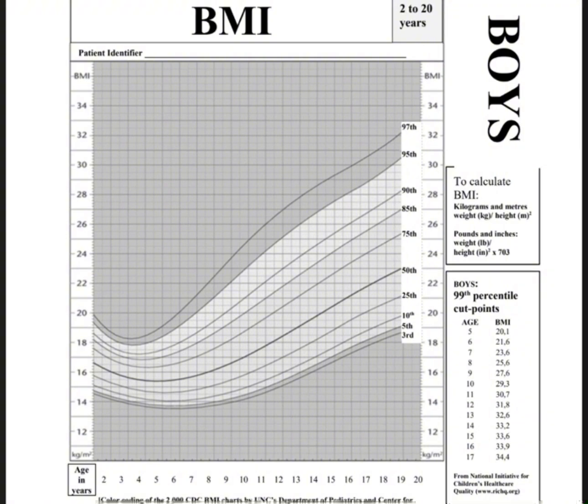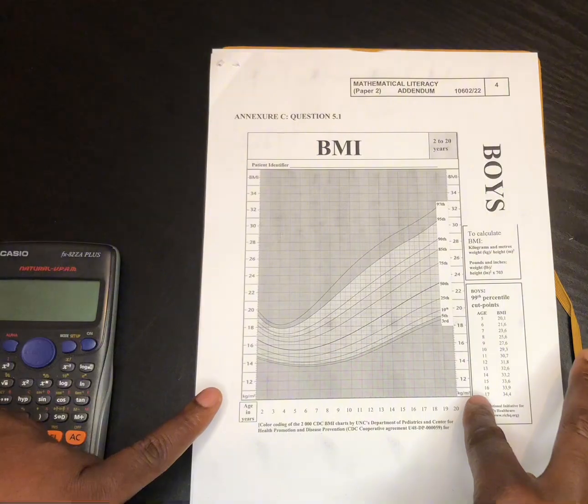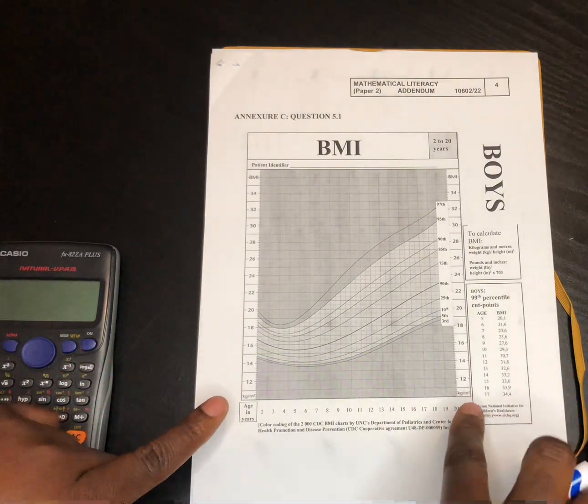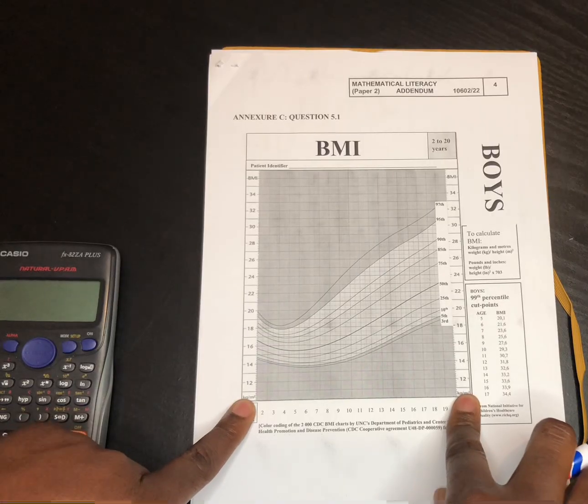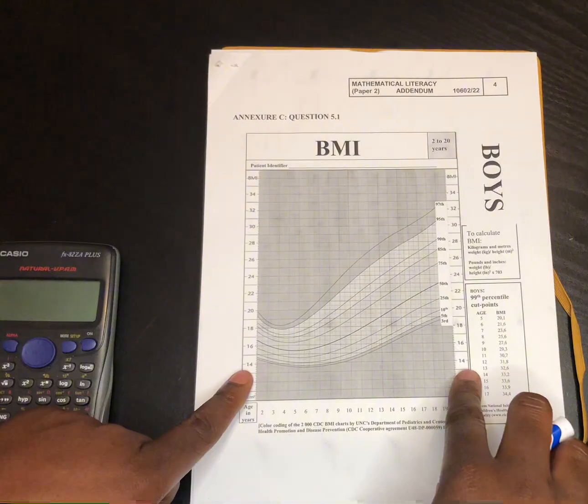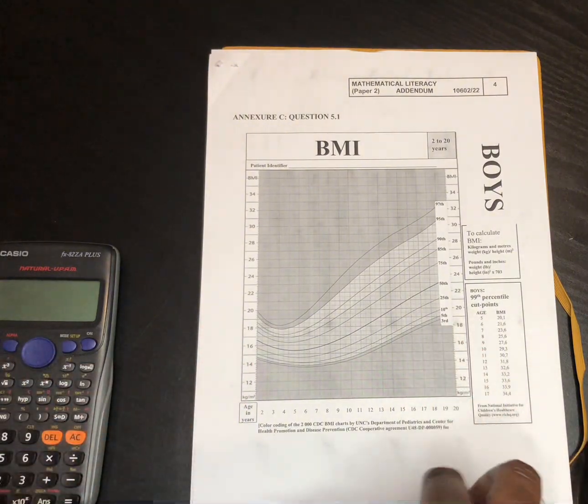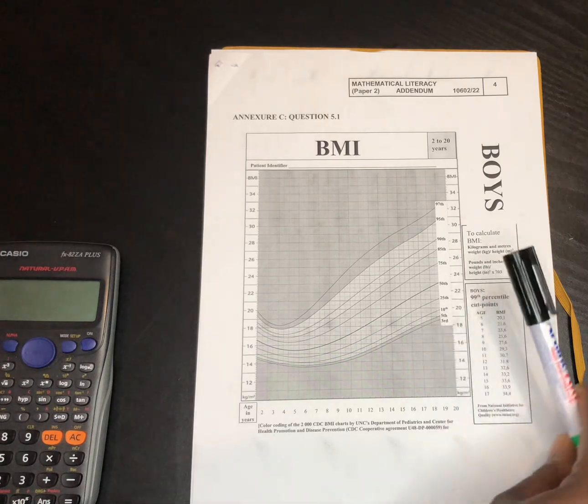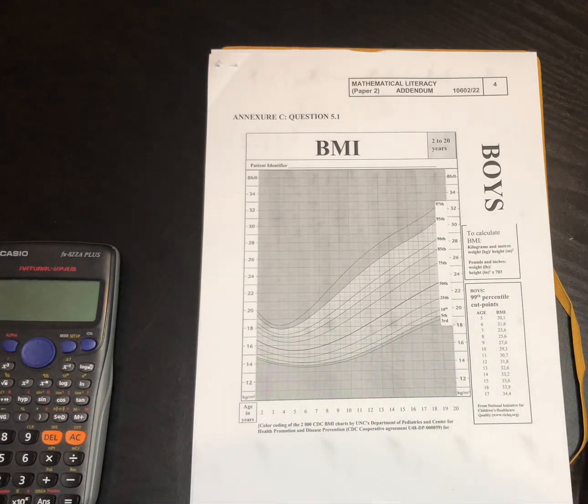So if you look at this BMI chart, we have years or age in years here. It represents the age in years. We have the BMI in kilograms per meter squared. If you look at these two lines, they represent the same thing. It's the BMI here: 12, 14, 16, 18, 20, up to 34. We also have the percentile from the third percentile up to the 97th percentile.